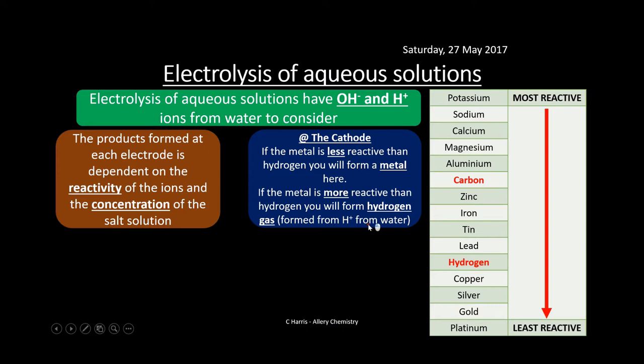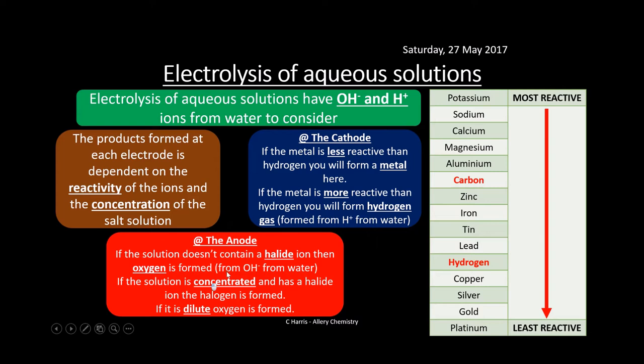At the anode, if the solution doesn't contain a halide ion (chloride, bromide, or iodide) then oxygen is formed from OH⁻ ions in the water. If the solution is concentrated and contains a halide ion, the halogen is formed — chlorine, bromine, or iodine. However, if the salt solution is dilute, oxygen is formed instead. You must look out for the conditions and be aware of what is actually produced.